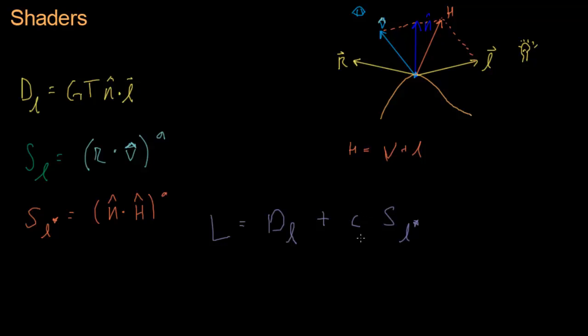And this C right here is a coefficient. Sometimes the material has a lot of specularity, and sometimes it has not a lot of specularity. And so we put this C here so we can control the level of specularity of our object.